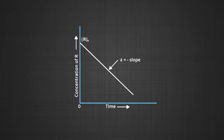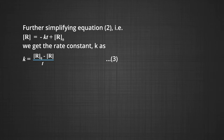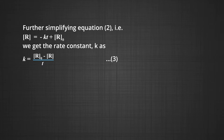The graph shows the variation in concentration versus time for a zero order reaction, helping you find the slope and intercept. Further simplifying equation 2, the rate constant K = (R₀ − R)/T. This is equation 3, where R₀ is the initial concentration and R is the concentration at time T. All zero order reactions obey equation 3. If the values of R₀, R, and T are known, the rate constant can be easily evaluated.